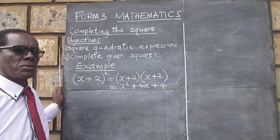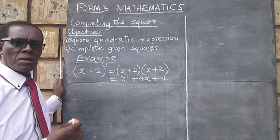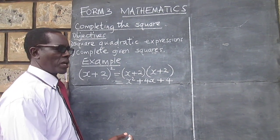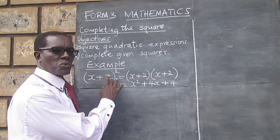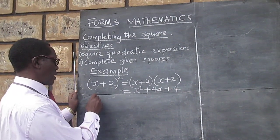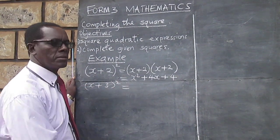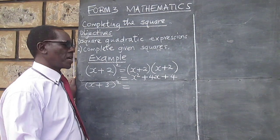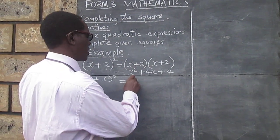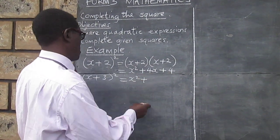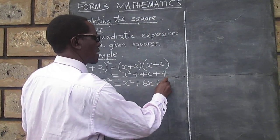Let's square one more, and then we look at how we can now complete the square. Having known that x plus 2 squared gives us that, x plus 3 squared gives us x squared plus 6x plus 9.